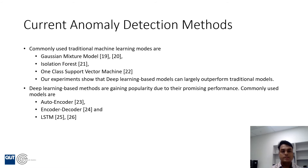Current anomaly detection systems can be divided into mainly two categories: traditional models and deep learning based models. Traditional models include Gaussian mixture model, isolation forest, one-class support vector machine, and so on. Our experiments show that deep learning based models can easily beat these models. Currently, deep learning models are gaining popularity because of their promising performance. Commonly used deep learning models are autoencoder, encoder-decoder, LSTM, and other models.